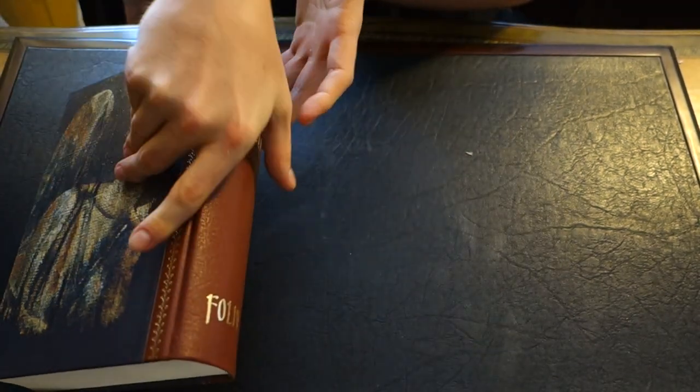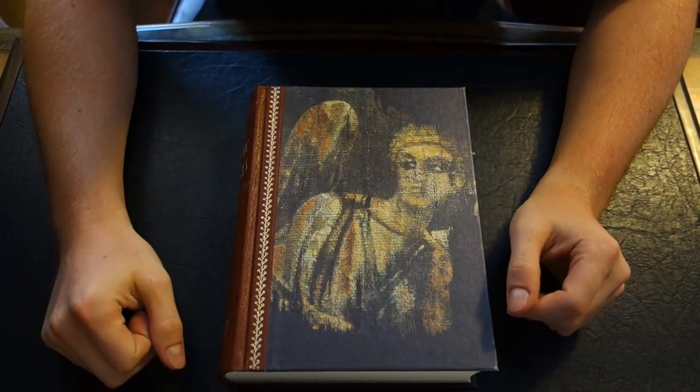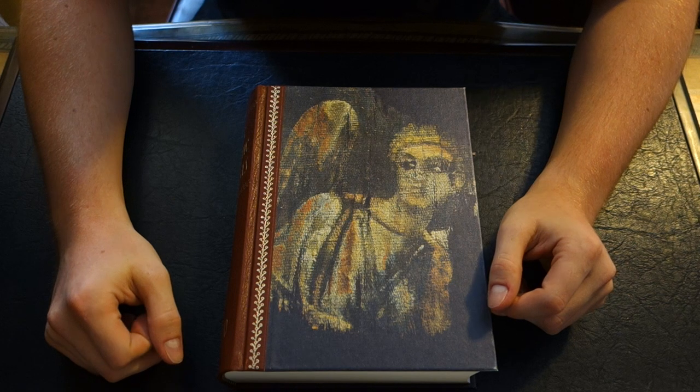So that's the Gnostic Gospels by the Folio Society. Like I said, they offer this on the Folio Society right now for sale, or you can find it secondhand on abbooks.com.